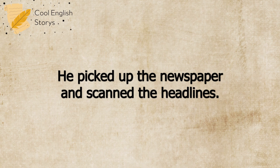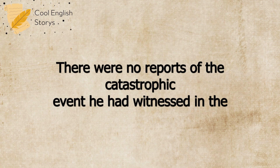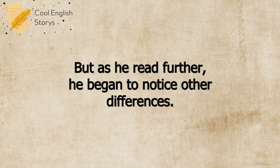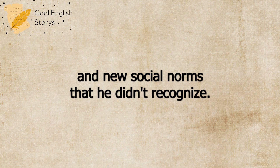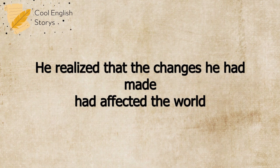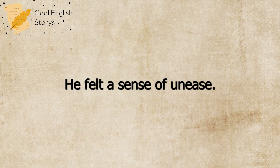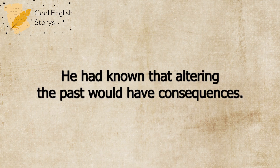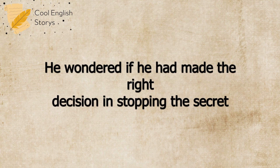He picked up the newspaper and scanned the headlines. The news was different from what he remembered. There were no reports of the catastrophic event he had witnessed in the future. But as he read further, he began to notice other differences. There were new technologies, new political movements, and new social norms that he didn't recognize. He realized that the changes he had made had affected the world in countless ways, both big and small. He felt a sense of unease. He had known that altering the past would have consequences, but he had not anticipated the scope of those consequences. He wondered if he had made the right decision in stopping the secret society.